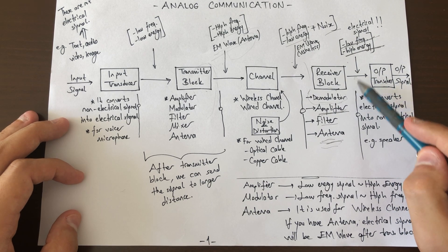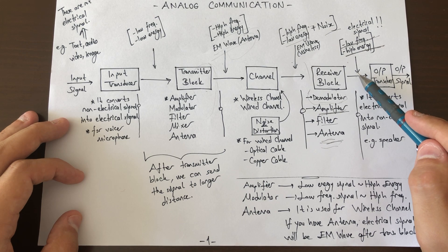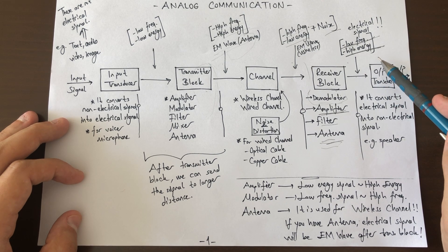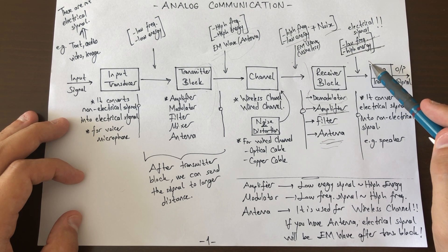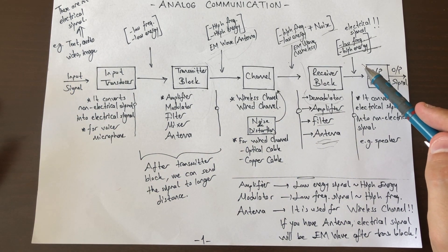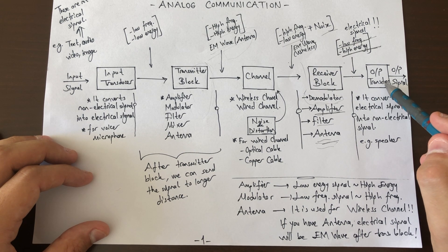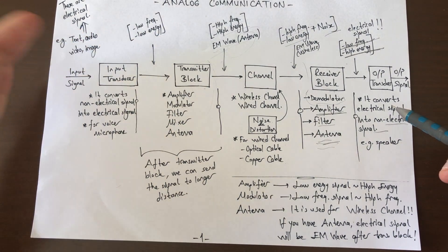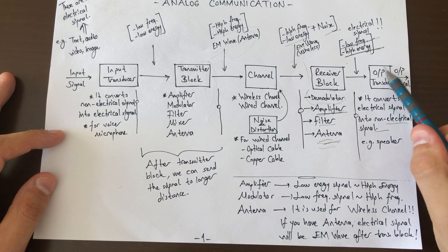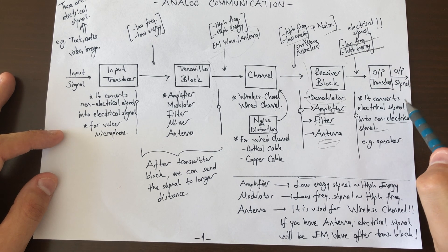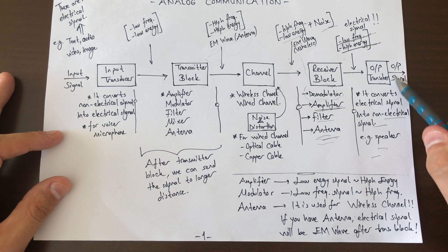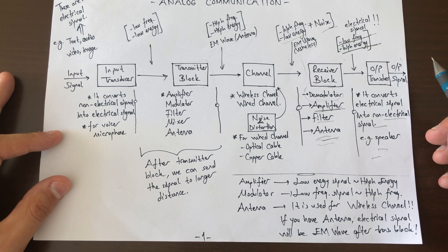If the customer wants to get the message, they can't use the electrical signal directly — we should convert it into a non-electrical signal such as text, audio, video, or image. For this we use an output transducer, which converts the electrical signal into a non-electrical signal. For example, a speaker is an output transducer, and we get the output signal finally.